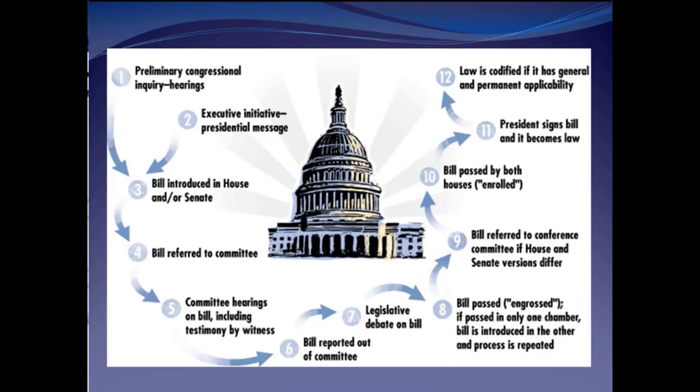Fourth, the committee can mark up the bill and report it as amended to the full House or Senate. Fifth, the leadership of the Congressional chamber decides whether or not to bring the bill to the floor. If so, the bill can be debated and amended, and the amended bill is then voted on by the entire membership of that chamber. A bill passed by one chamber of Congress is called an engrossed bill. Sixth, the bill is referred to the other chamber, where it's immediately referred to the committee with jurisdiction. Sometimes the referred chamber is already working on its own version of the bill, and competing bills can be passed back and forth until they reach agreement.